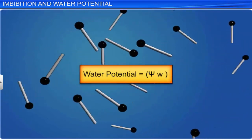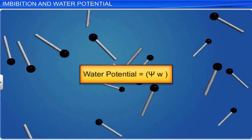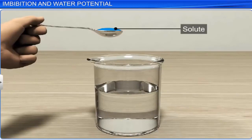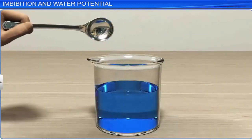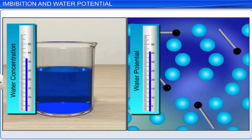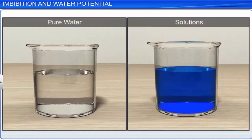Water potential is expressed in pressure units — Pascal, or Pa. The water potential of pure water at standard temperature and pressure is taken as zero. If a solute is dissolved in pure water, the solution has fewer free water molecules, which decreases its water concentration, resulting in decreased water potential. Therefore, pure water has the greatest possible water potential, whereas the water potential of all solutions is less than that of pure water.